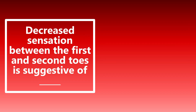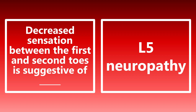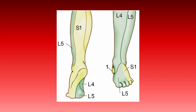Decreased sensation between the first and second toes is suggestive of L5 neuropathy. The L5 dermatome covers the medial part of the foot, including the web space between the first and second toe. So decreased sensation in that web space is associated with L5 neuropathy.